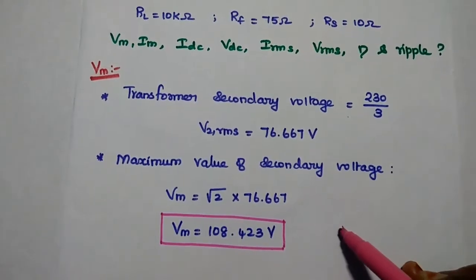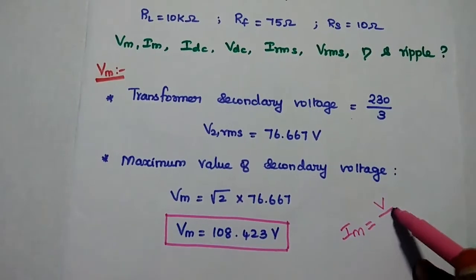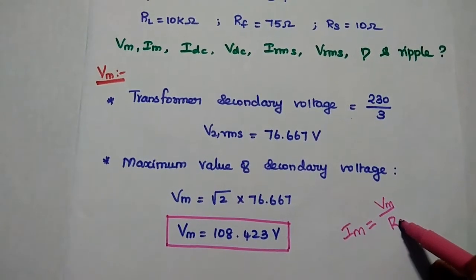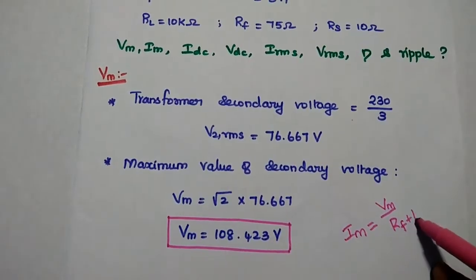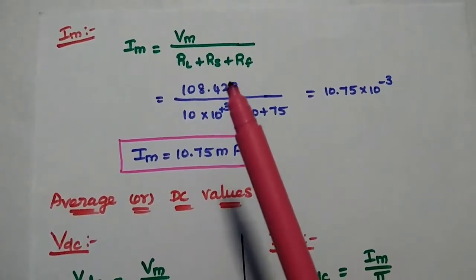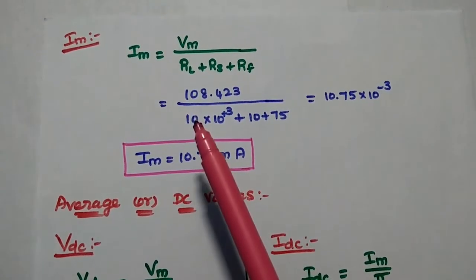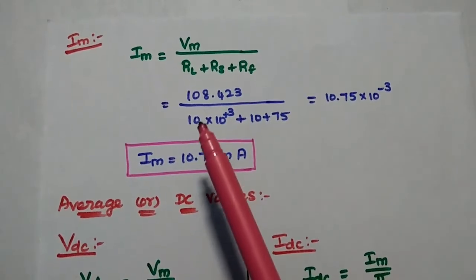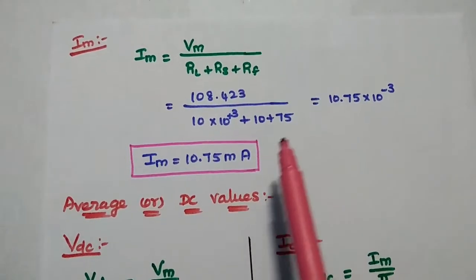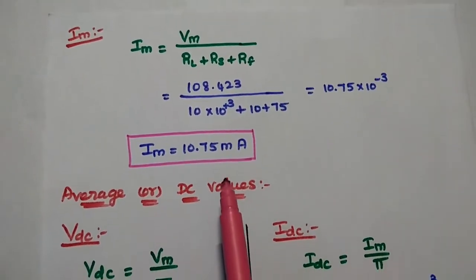To find the maximum current, all three resistances are in series: RF + RS + RL. So Im = 108.423 / (10,000 + 10 + 75) = 10.75 mA. This is the maximum current value.